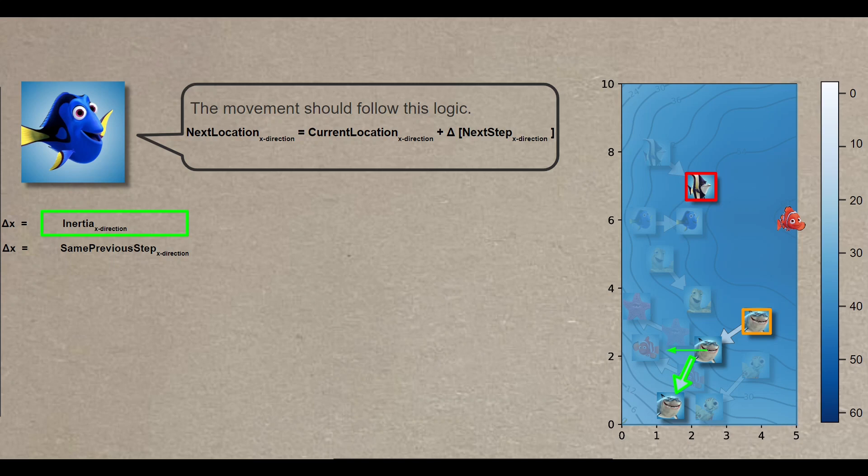In your case, Bruce, your last location, marked in green, was one step to the left. Let's add some approximate coordinates here to make the calculation a bit easier on us. Which is 1.5 minus 2.5. This indicates that the inertia component should mirror your previous step, a single step to the left.